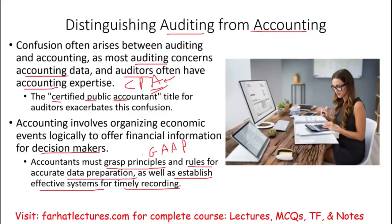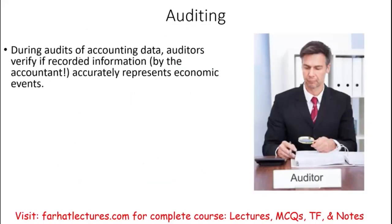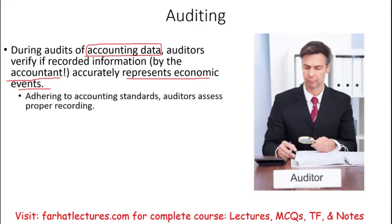Now let's move from the accountant to the auditor. During an audit — assuming we're auditing accounting data — auditors verify the transactions recorded by the accountant. So the accountant has already recorded the transactions, and now the auditor is determining whether those records represent the true economic event. They have to adhere to accounting standards.